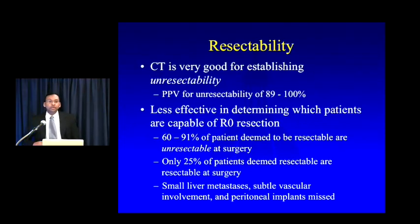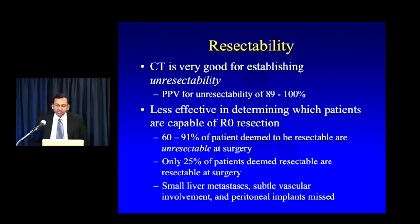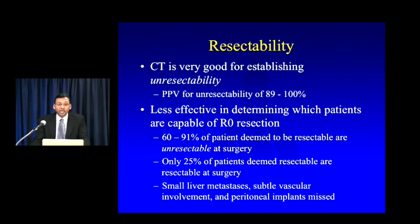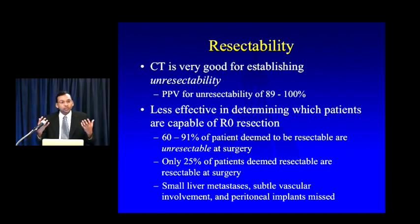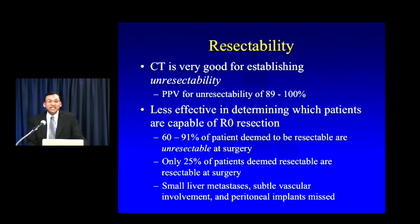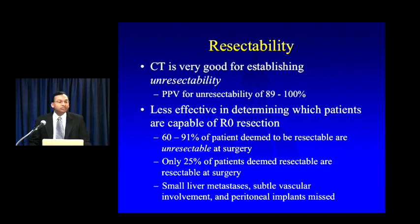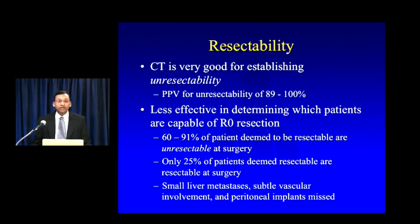How good is CT for determining resectability? CT is actually quite good for establishing unresectability — the positive predictive value for unresectability may be as high as 100%. The problem is determining resectability — whether the patient is capable of undergoing an R0 resection with negative surgical margins. Somewhere between 60 to 91% of patients deemed resectable on CT are found unresectable at surgery, and only about a quarter of patients deemed resectable are actually resectable. What we miss: small liver metastases, subtle vascular involvement, and tiny peritoneal implants.